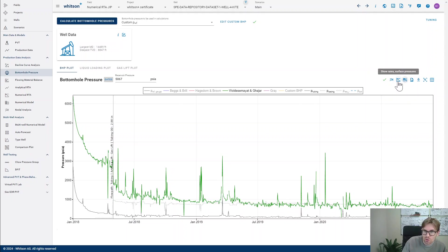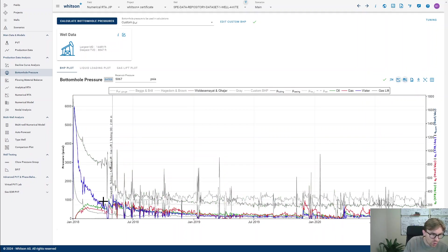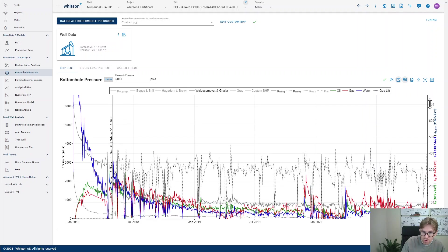Another thing you can do is you can also show the surface rates as a function of time. Like, if there's something weird happening with your data, you can look at the surface rates right here, and that would come on the secondary axis that we have over here. And this part right here, that will be the gas lift rates.